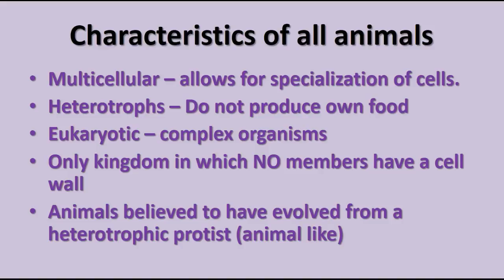There are certain characteristics that all animals have in common. First, all animals are multicellular, which allows them to have specialized cells that do specialized jobs — dividing labor into different parts like muscles, nerves, sense organs, the digestive system, and so forth. All animals are also heterotrophs: they don't produce their own food, and most animals actually ingest their food rather than absorb it like fungi do.